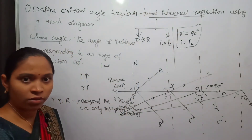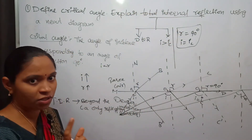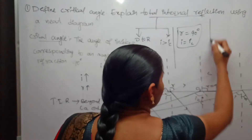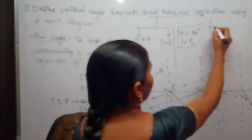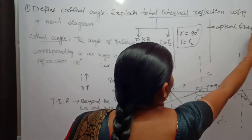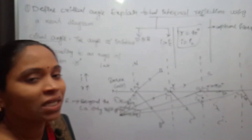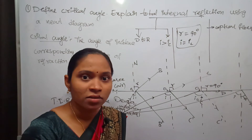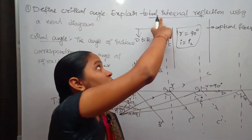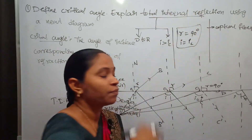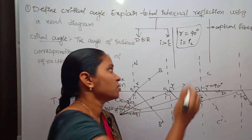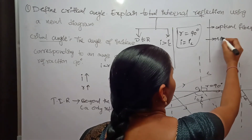An example of total internal reflection is optical fibers. In optical fibers, this phenomenon — total internal reflection — is used for the transmission of signals. One more application is mirages, which I will explain in the next class.